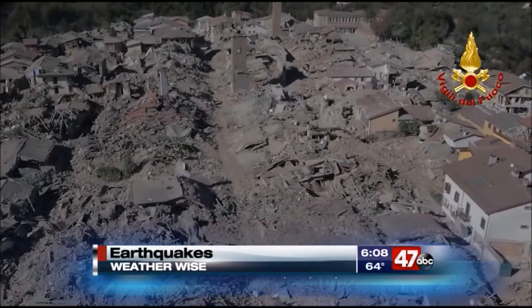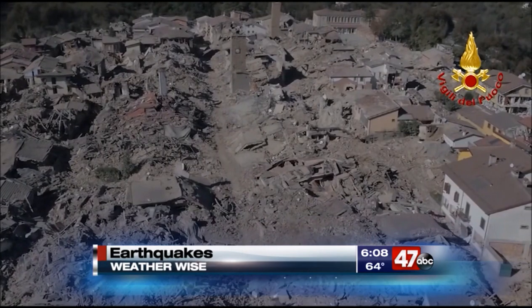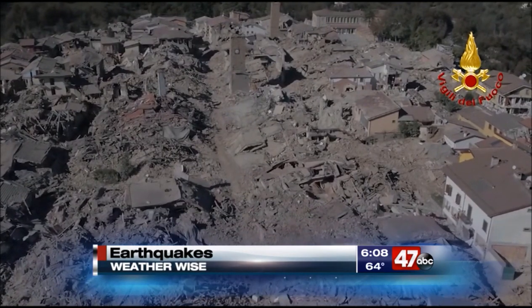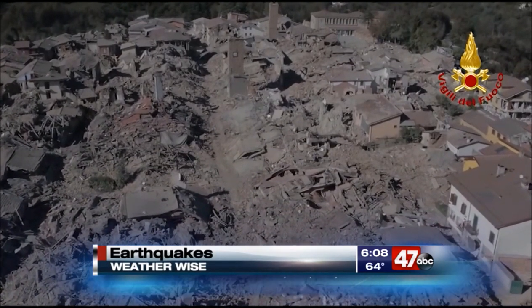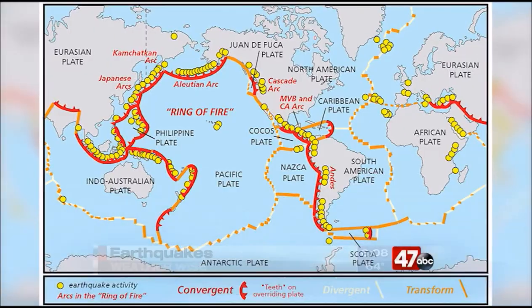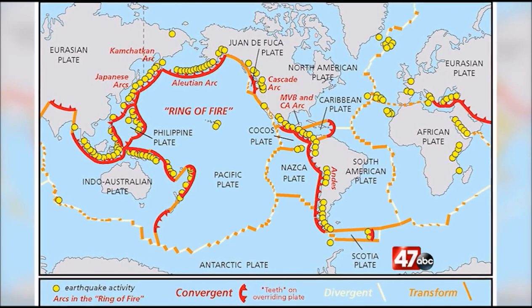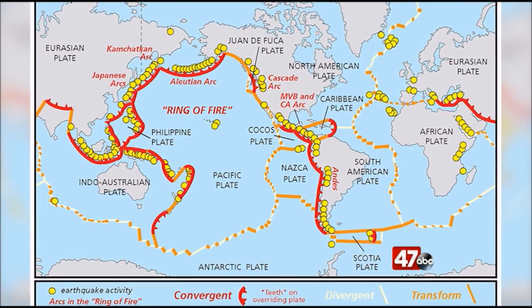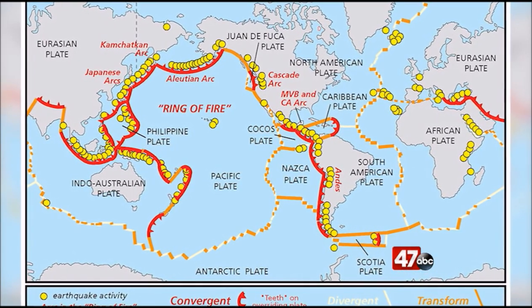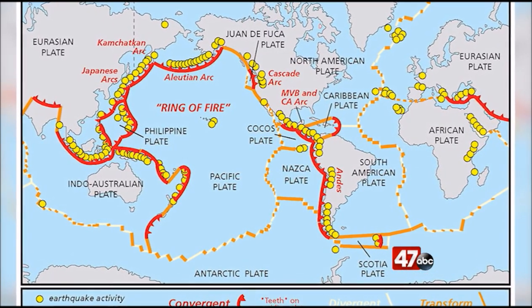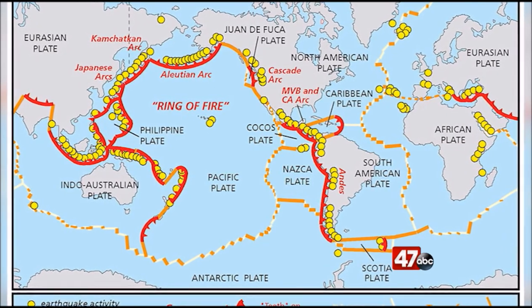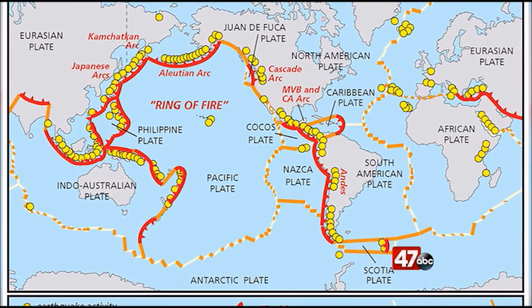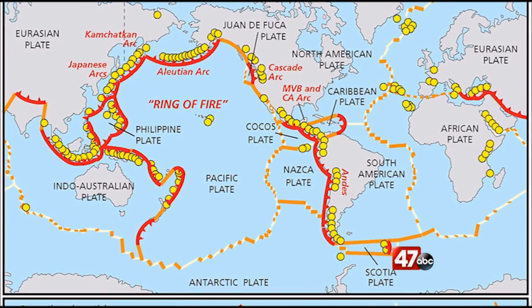While earthquakes can happen anywhere, they're mainly focused along plate boundaries and specifically around the rim of the Pacific Ocean. Actually 81% of the world's earthquakes happen around the Pacific, and due to that active part of the Earth's crust it's been dubbed the Ring of Fire.